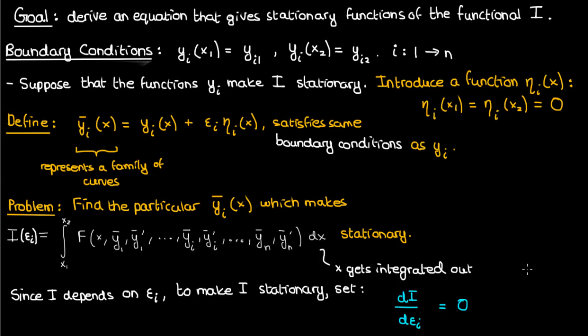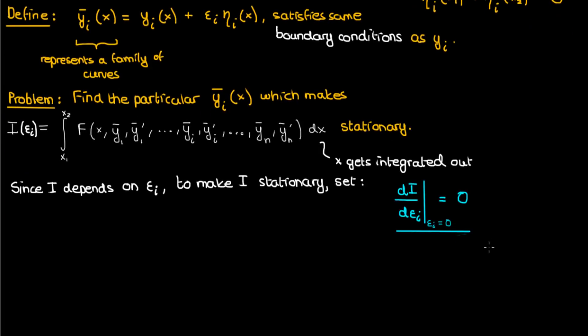My primary objective is to make the functional I stationary, but since capital I only depends on epsilon_i, making the functional stationary is equivalent to setting dI/d(epsilon_i) equal to zero — it's like single variable calculus. We already know that epsilon_i equals zero corresponds to a stationary I, since yi was already assumed to be stationary. So we'll use the fact that dI/d(epsilon_i) is zero at epsilon equals zero, differentiate the integral expression, do some algebra, and arrive at the Euler-Lagrange equation for several dependent variables.